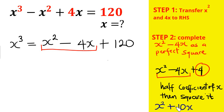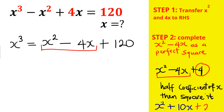For those wondering why we add 4 and not some other number: to make x² + 10x a perfect square, take half of 10, which is 5, then square it to get 25. So adding 25 makes x² + 10x + 25 a perfect square.